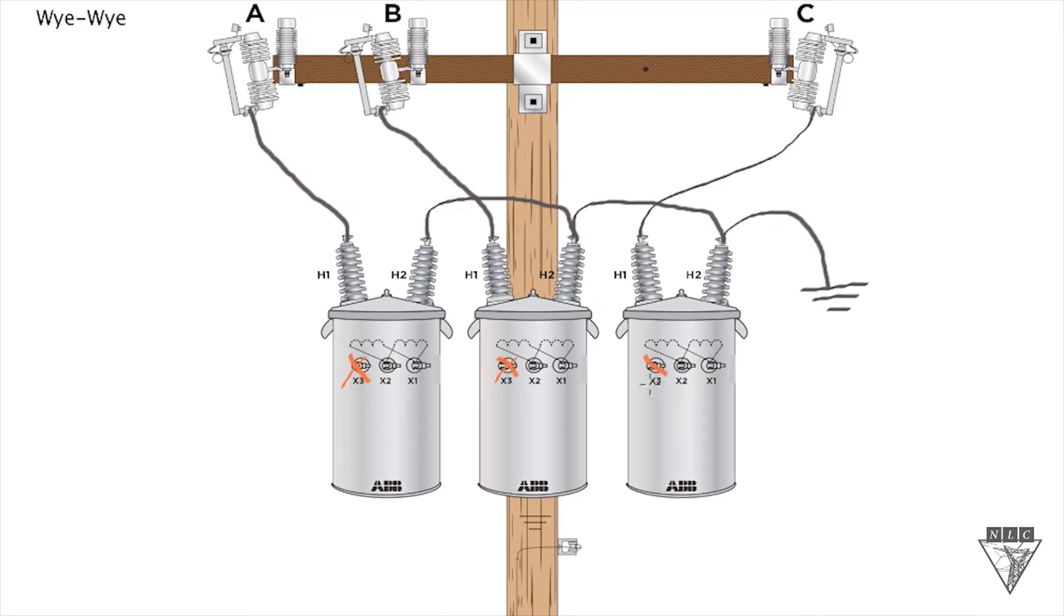This is for a Y secondary connection. You only utilize two of the bushings. Kind of an industry standard is the X2 bushing is your neutral and then the X1 bushing you use is your hot bushing.